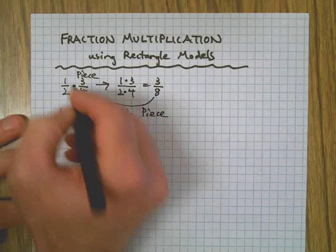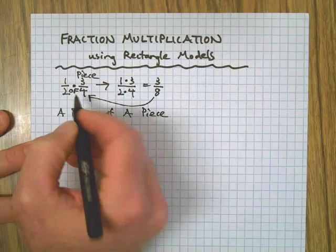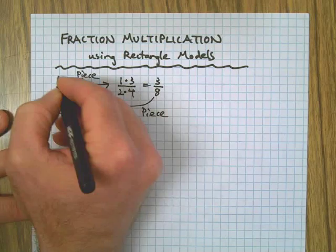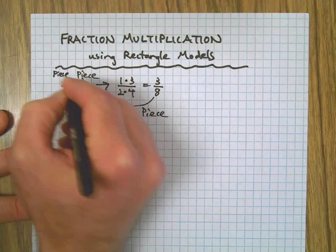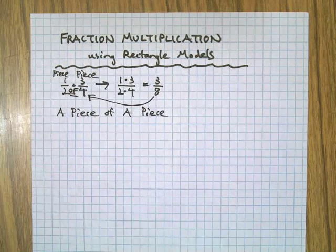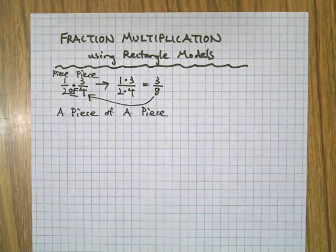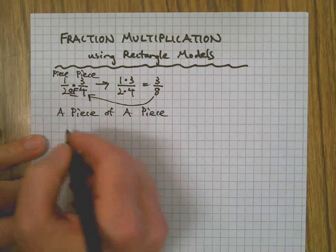And then multiplying—that's where the word 'of' comes in—and you can see that we're taking a piece of that piece, so we're going to get an even smaller piece. What does that mean?